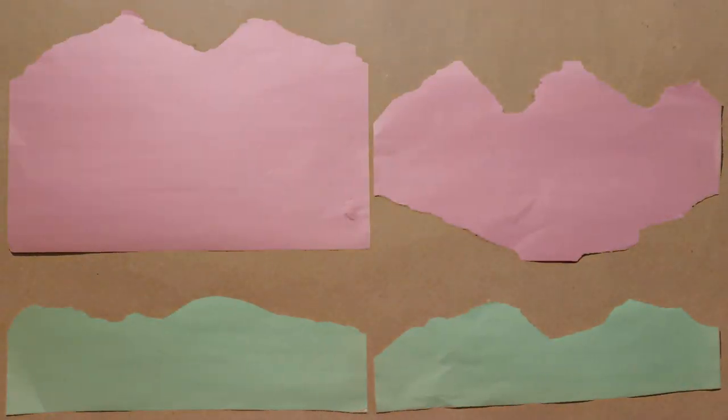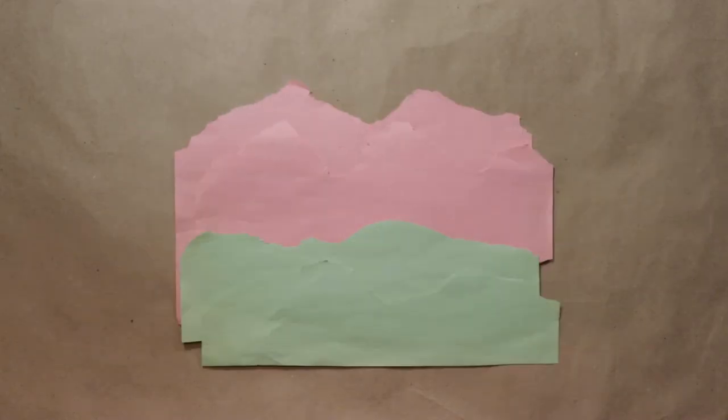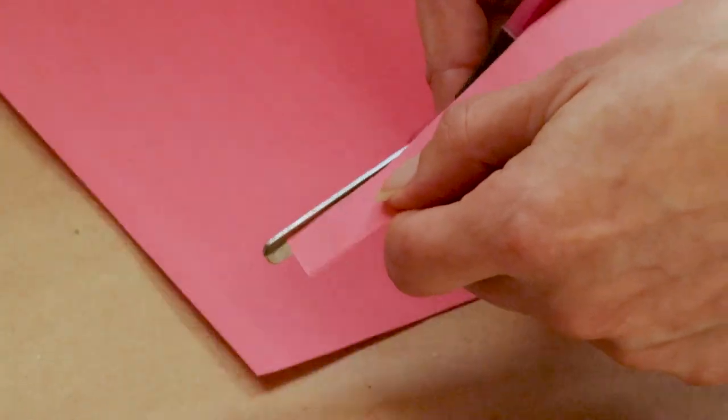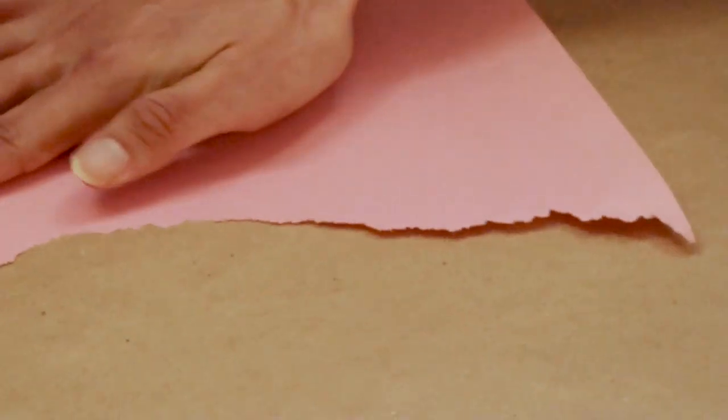Tear wavy strips of different sizes. These will be our hills. Have a good mix of cut, torn, large, and small pieces for a better picture.